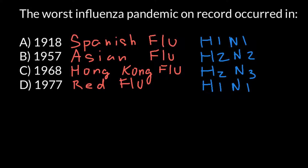Nowadays we have models that explain how this virus mutates — one model is called antigenic drift and another is antigenic shift. And once again, only three of these years represent pandemics, and one is an epidemic. So the correct answer is answer A — 1918.